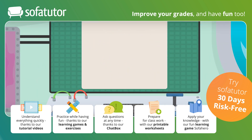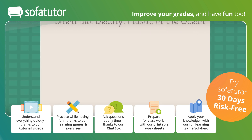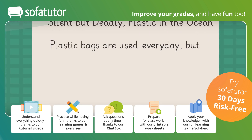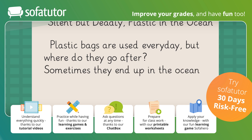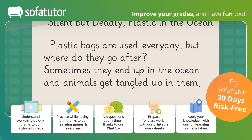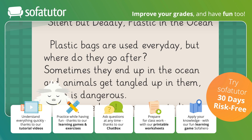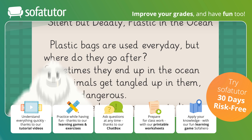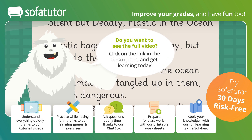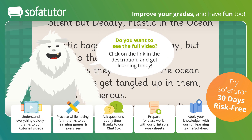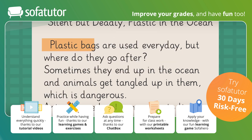To give the author's opinion, say something like: The author said blank because blank. Now that we've learned about author's purpose, let's see what Pearl has found. Plastic bags are used every day, but where do they go after? Sometimes they end up in the ocean and animals get tangled up in them, which is dangerous. Animals need a clean ocean to live in. In order to find the author's purpose, first think about what the text is about. Here, it is plastic bags in the ocean.